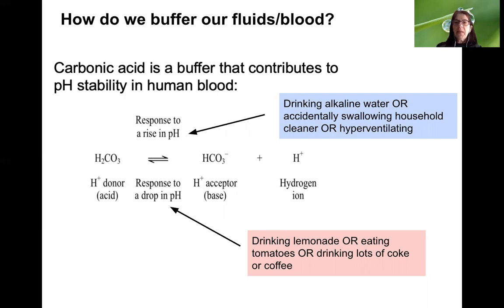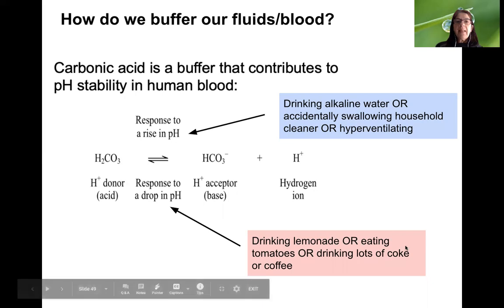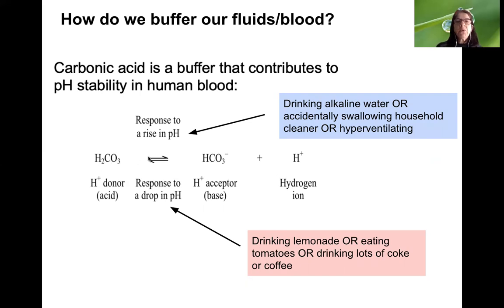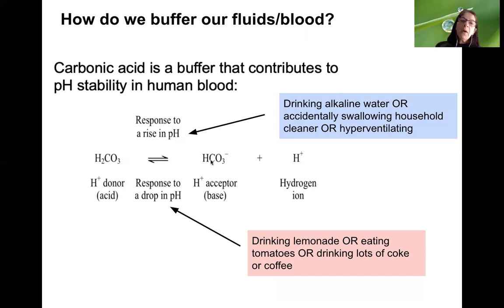If you have fewer hydrogen ions in your blood, the equilibrium shifts to the right: carbonic acid dissociates to increase hydrogen ion concentration. If you increase hydrogen ion concentration by drinking lots of lemonade, coke, or coffee, the equilibrium shifts to the left, forming more carbonic acid. So carbonic acid can either dissociate to generate more hydrogen ions, or form more carbonic acid to remove hydrogen ions.